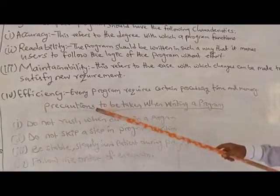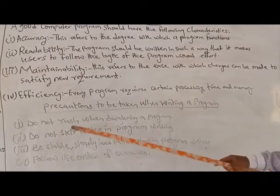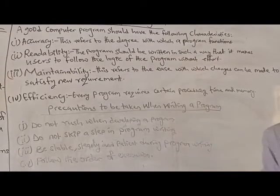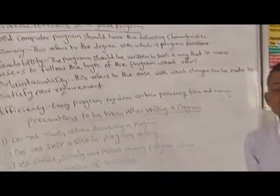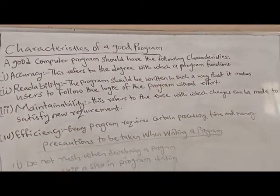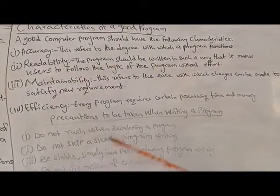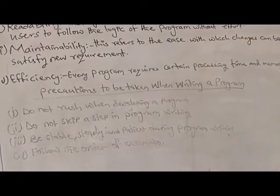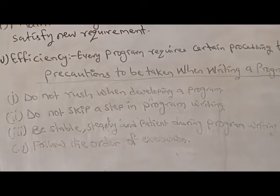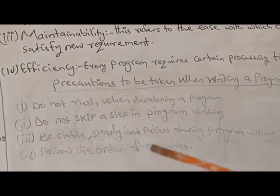Now let's look at the precautions for writing good programs. First, do not rush when developing a computer program — this is a logical process and if you rush you are going to miss other steps. Second, you should not skip a step in program writing; you must follow it sequentially. If you miss a step, the whole program will become haphazard.